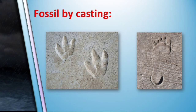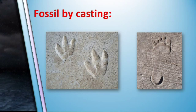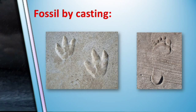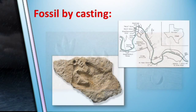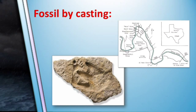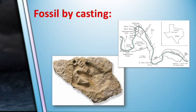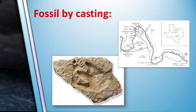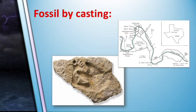These dinosaur footprints are found all over the world and there are even many different places to see them here in Texas. One such place along the Paluxi River near Glen Rose has even reported footprints of humans and dinosaurs in the same casting, and these tracks have been verified by CT scans.